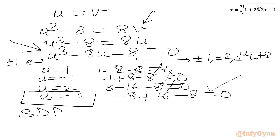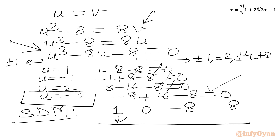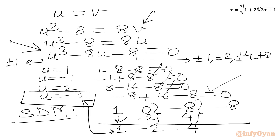We use synthetic division. Writing all the coefficients of the cubic equation: coefficient of U cube is 1, coefficient of U squared is 0, coefficient of U is minus 8, and the constant is minus 8. The leading coefficient is 1. Multiply minus 2 by 1 to get minus 2; add to 0 to get minus 2. Multiply minus 2 by minus 2 to get plus 4; add to minus 8 to get minus 4. Multiply minus 2 by minus 4 to get plus 8; add to minus 8 to get 0. The resulting quadratic is U squared minus 2U minus 4 equal to 0.